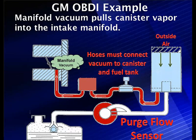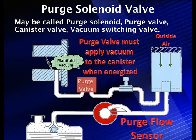Manifold vacuum pulls canister vapor into the intake manifold. There are two situations that can happen: we can have manifold vacuum pulling through lots of fuel vapors if the canister's been saturated, or it can pull through mostly fresh air if it's not. The basics are the hoses must connect the vacuum to the canister, and we're going to be using a solenoid — a purge valve.